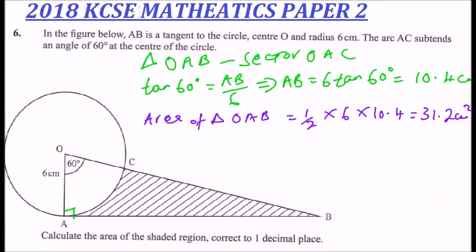Then we look for the area of the sector. We say area of the sector OAC is equal to, we use the angle 60, 60 divided by 360 degrees, you multiply by pi.